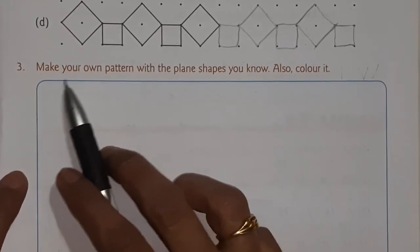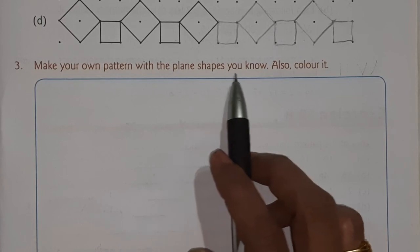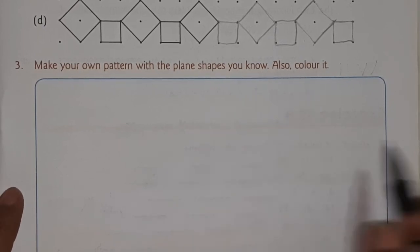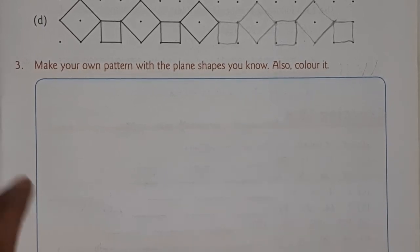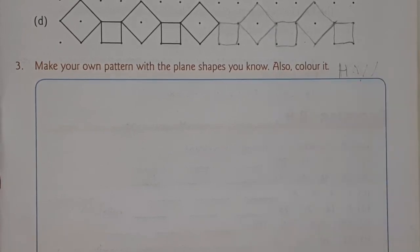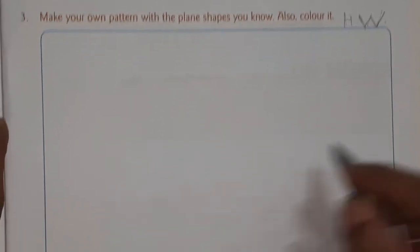Then question number three: make your own pattern with the plain shapes you know and also color it. So this is for homework — write HW here. You can draw different patterns and color them. Students, bye bye — we will meet in the next session.